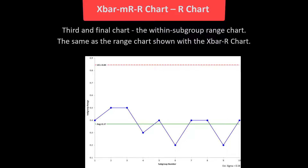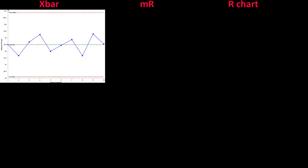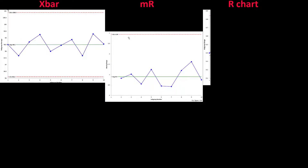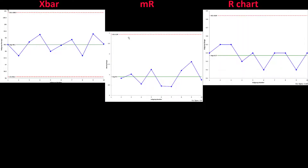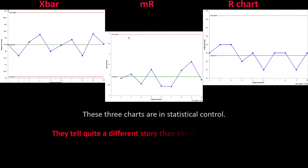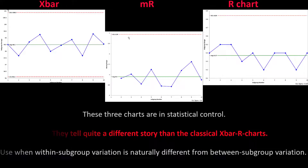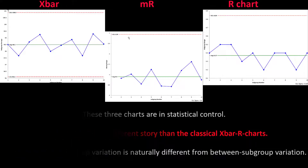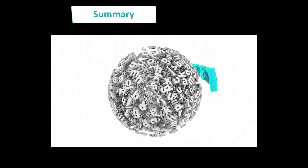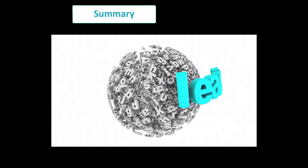We've replaced two charts with three charts to handle the situation where within subgroup variation differs from between subgroup variation: the X-bar chart, the moving range chart, and the R-chart. All three charts are in statistical control, telling quite a different story than the classical X-bar and R chart. This is what you want to do when the within subgroup variation is different from the between subgroup variation.